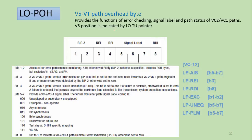V5 is the path overhead which gets added when we convert from a container to a virtual container. For example, for E1 (2 Mbps) signal getting converted to VC12, this overhead gets added for the lower orders. It has functions for bit interleaved parity, a bit for indicating remote error indication, remote failure indication, a signal label within the lower order mapping process, and remote defect indication. There are specific bit definitions within the V5 byte, and the associated alarms will be discussed in a separate session.